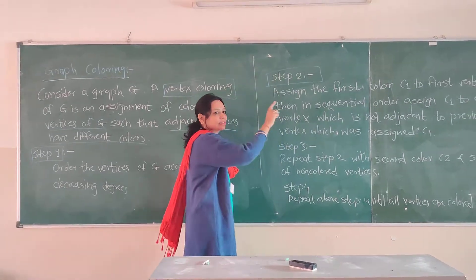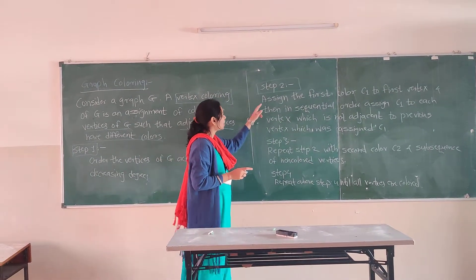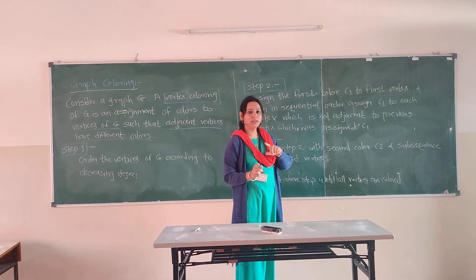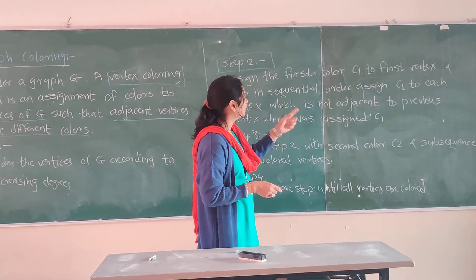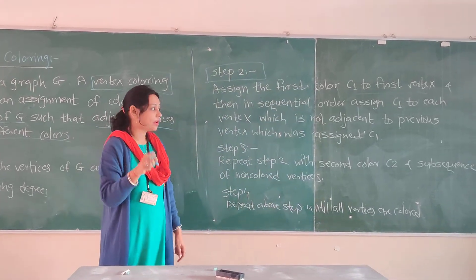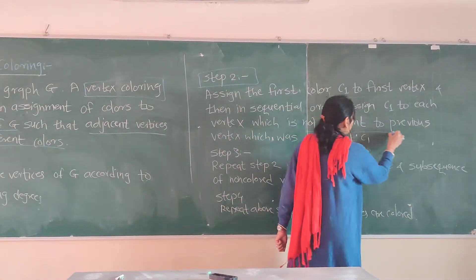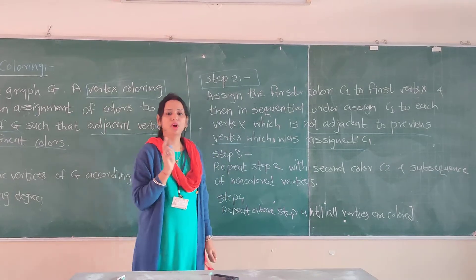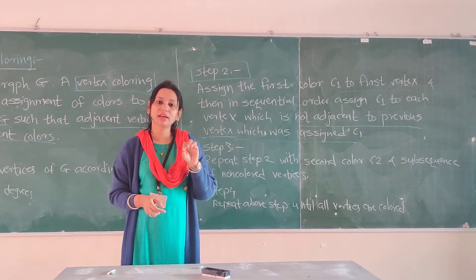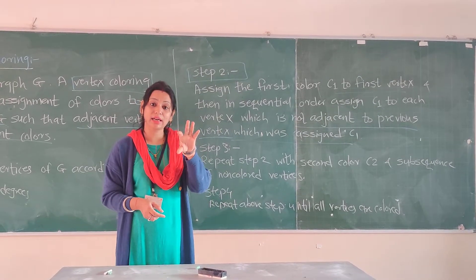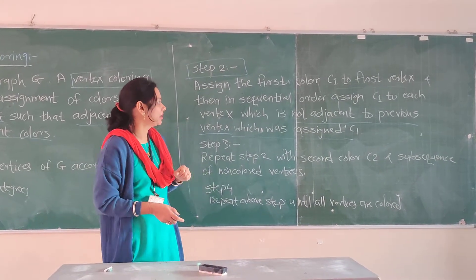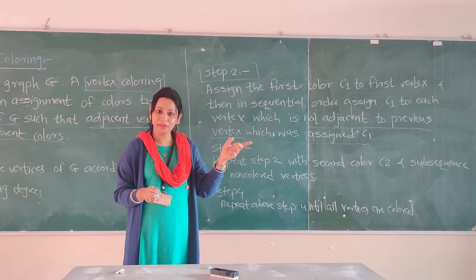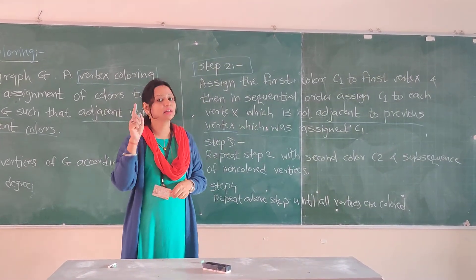In Step 2, now we are having the vertices. Assign the first color C1 to the first vertex of graph G, and then in sequential order, assign the color C1 to each vertex which is not adjacent to the previous vertex which was assigned C1. So we assign C1 to the starting vertex, and then assign C1 to each subsequent vertex that is not adjacent to any previously C1-colored vertex.